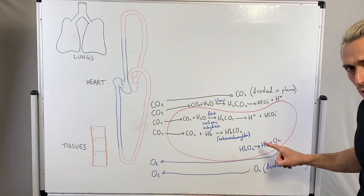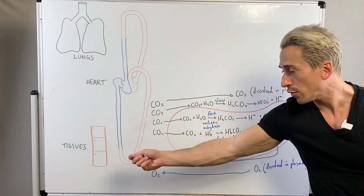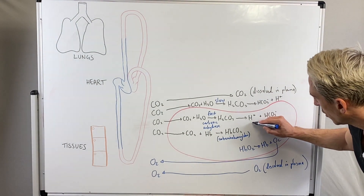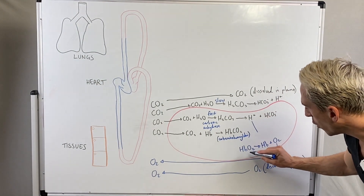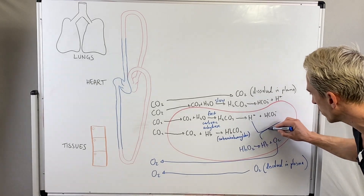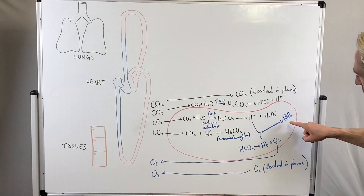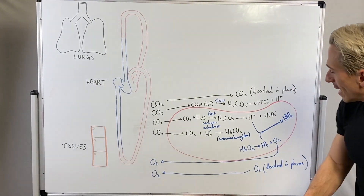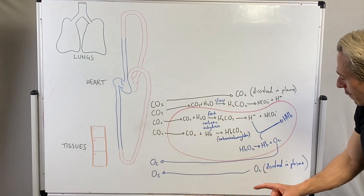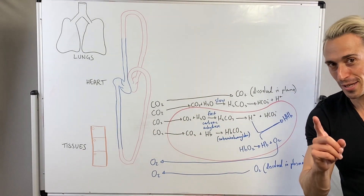An important point: what tells the oxygen to dissociate from the hemoglobin? How does it know it's at the tissues and time to deliver itself? The hydrogen ion is what does this. The hydrogen ion forces the hemoglobin to dissociate from the oxygen, because the hydrogen ion wants to bind to the hemoglobin to form deoxyhemoglobin. This is important because hydrogen ions need to be buffered — too many free-floating hydrogen ions will be too acidic. Hemoglobin can do this buffering inside the cell, and plasma proteins can do it outside the cell.